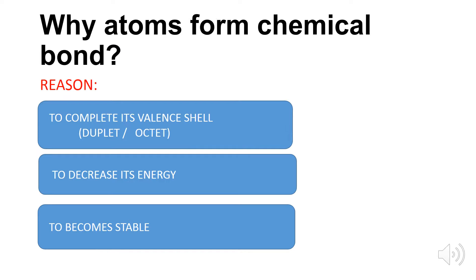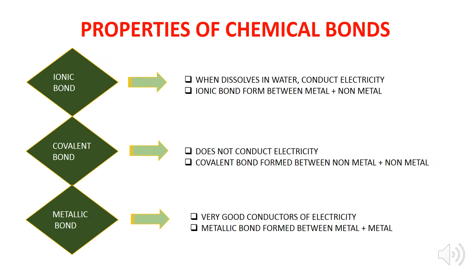Before going into detail, the question that comes to mind is: why do atoms form chemical bonds? The answer is that atoms form a chemical bond to complete their valence shell — either its duplet or octet — or to decrease their energy and become stable.